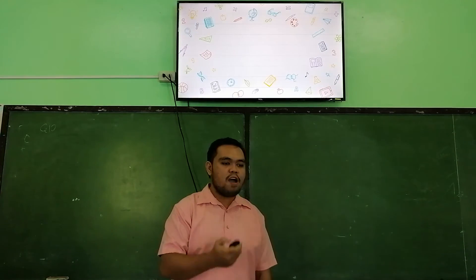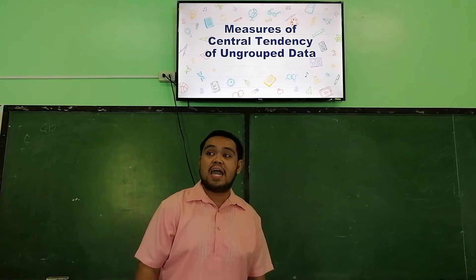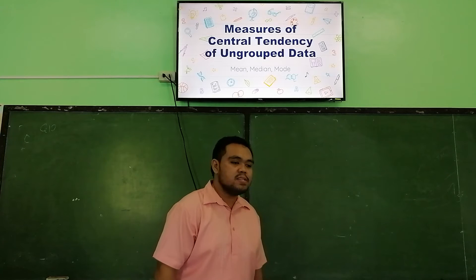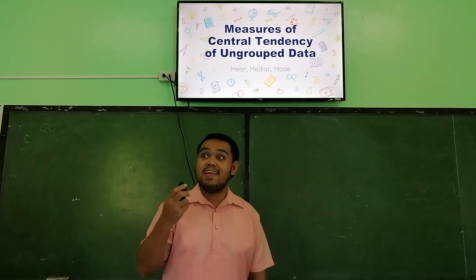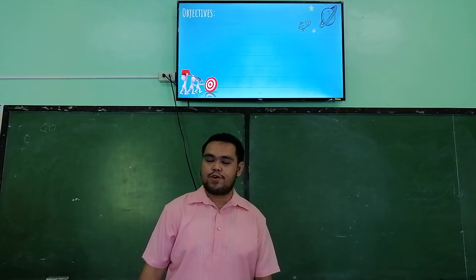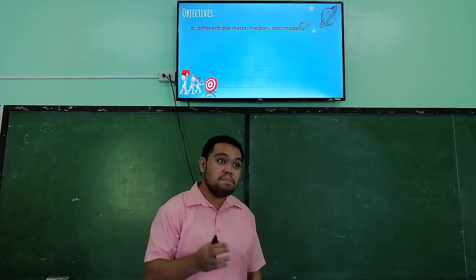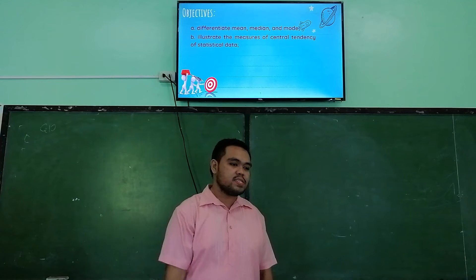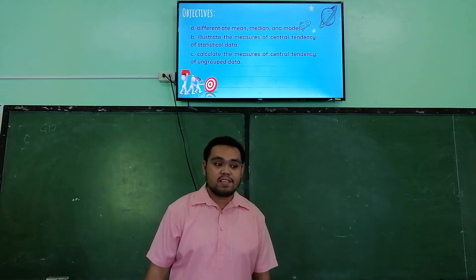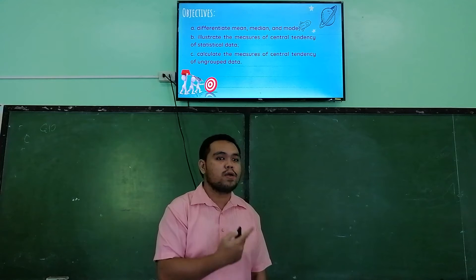So this morning, we are going to talk about the measures of central tendency of the ungrouped data. There are three ways in finding the central tendency — we have the mean, the median, and the mode. Before we start, let me present our objectives for today. First, differentiate mean, median, and mode. Second, illustrate the measures of central tendency of statistical data. Third, calculate the measures of central tendency of the ungrouped data.